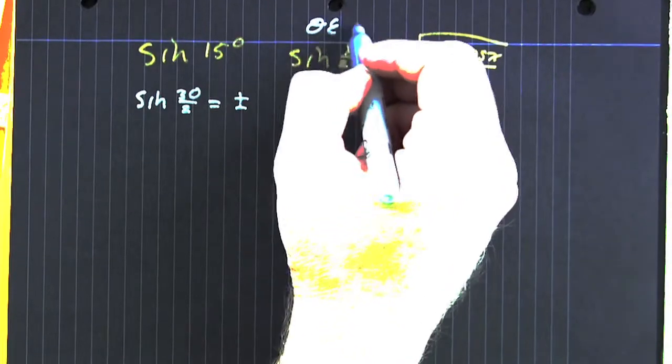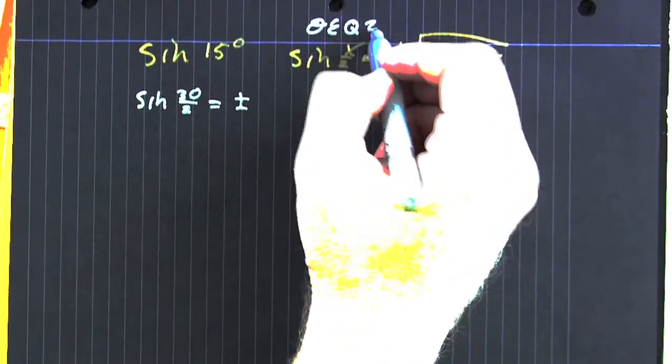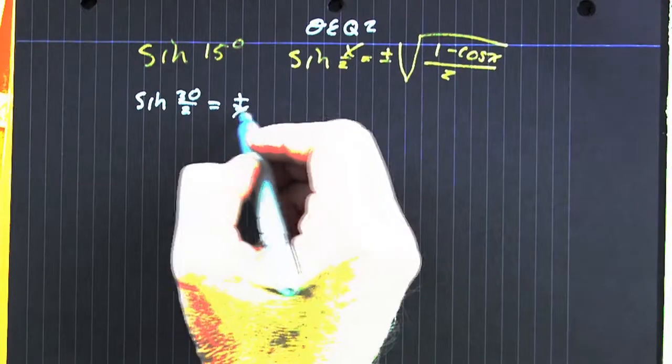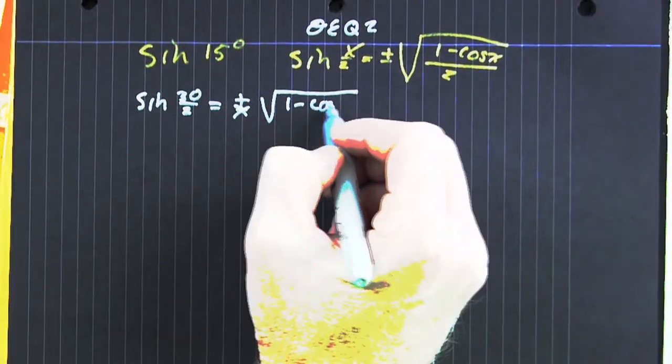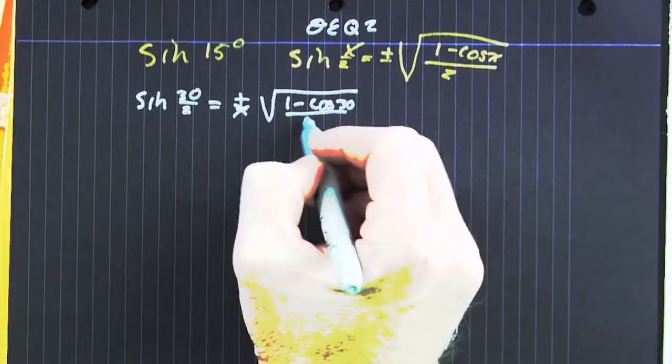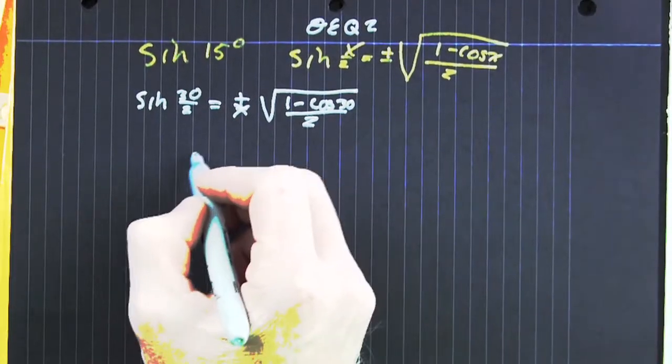But theta's in Q1. I don't know why you wrote Q2, but 15 degrees is in Q1. So we're going to strike out that negative sign because the sign is positive in that coordinate.